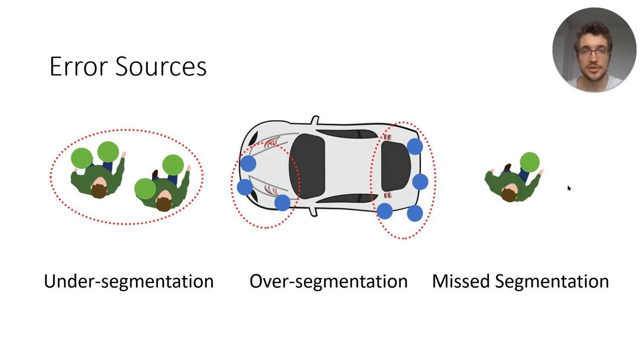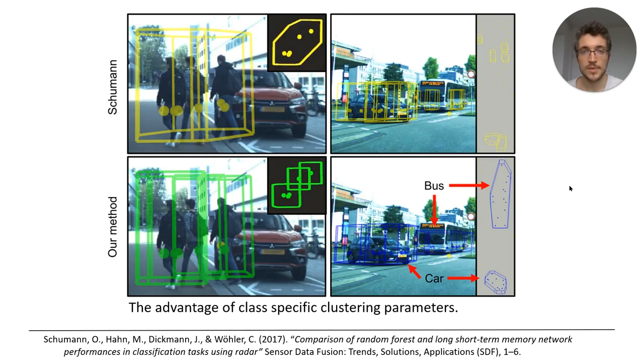Let me remind you of this slide where we presented the potential error sources in clustering. In the conventional pipeline, you have to use the same parameter for all classes, which can be too small for big objects or too big for small objects. Instead, in our pipeline, you can first perform the classification and then the clustering.